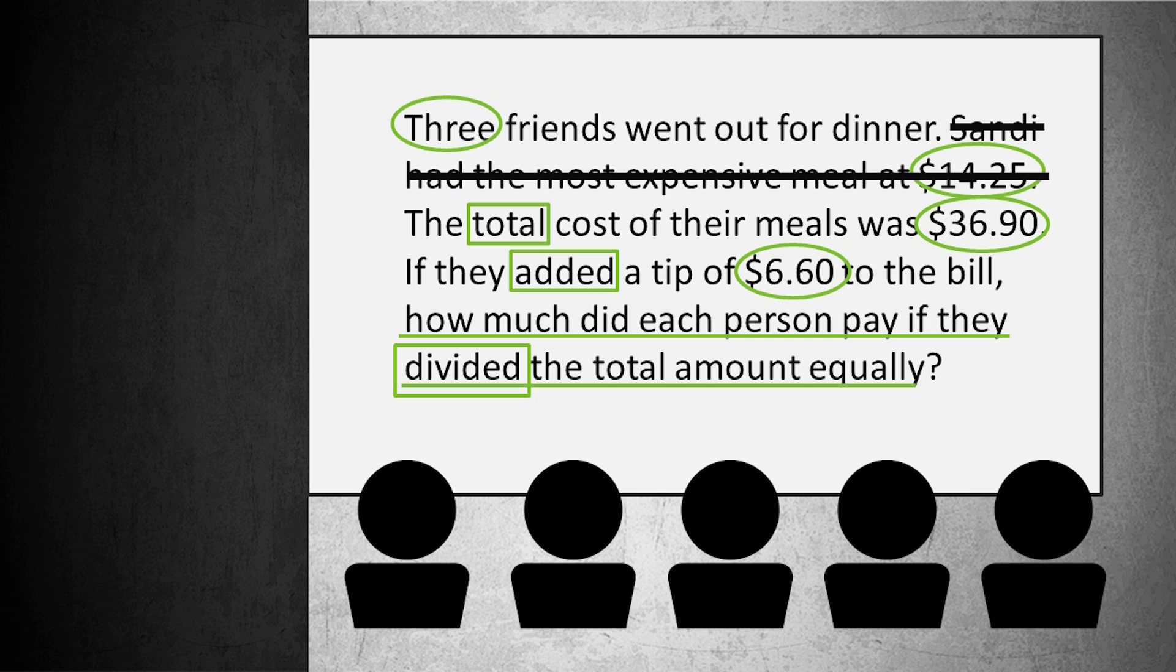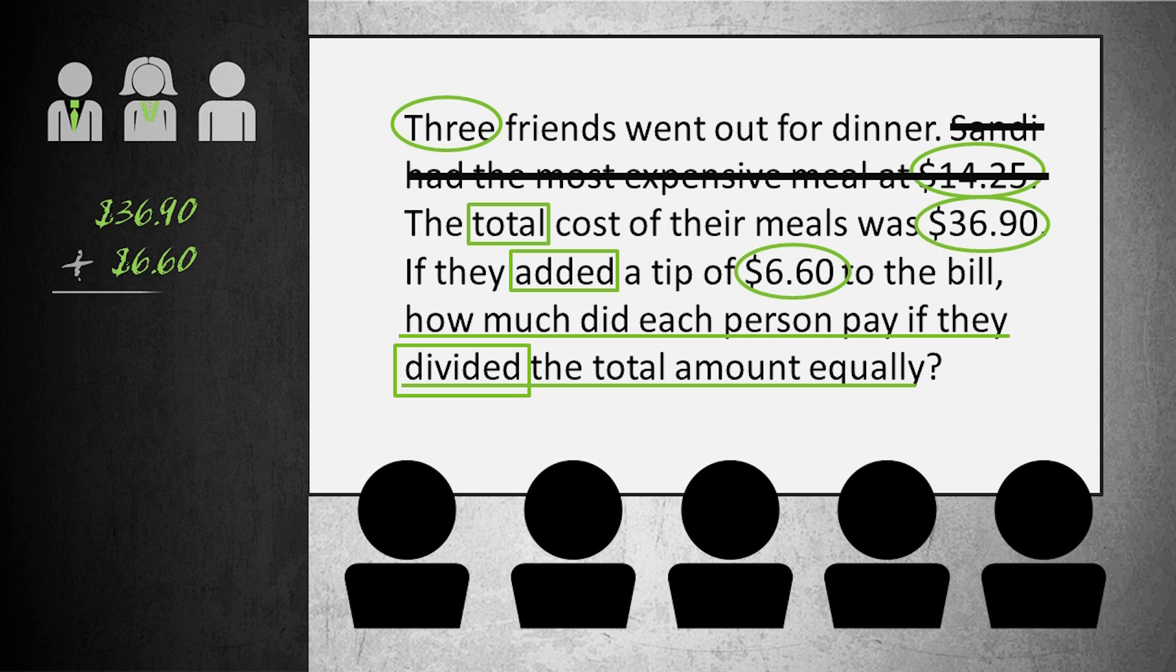Let's evaluate the problem. There were three friends with a bill of $36.90 and a tip of $6.60. Now I can solve and check by adding $36.90 and $6.60 to get $43.50, and then dividing that amount by three. So I get the answer of $14.50.